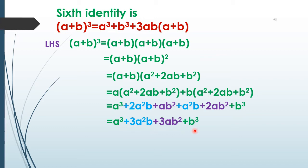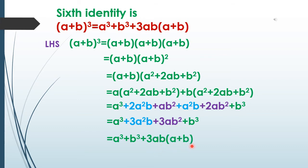We can also write this as a³ + b³ + 3ab(a + b). Finally, our formula (a + b)³ = a³ + b³ + 3ab(a + b) is confirmed, and LHS = RHS.